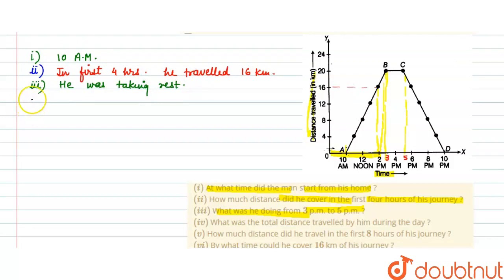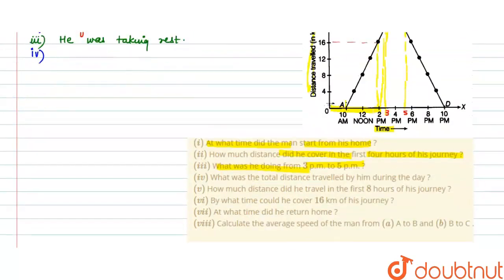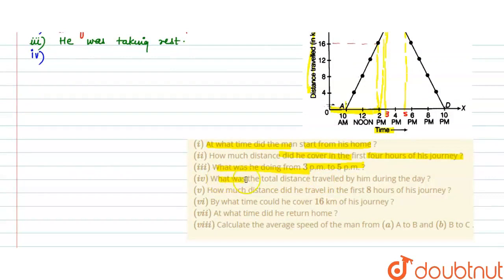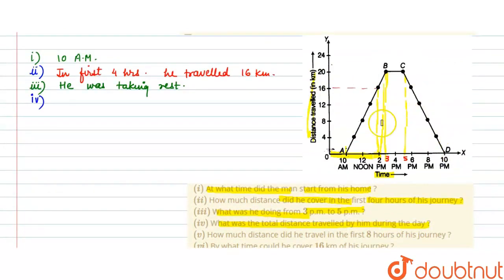Now, fourth part is asking: What was the total distance traveled by him during the day? The whole day, how much total distance did he travel? Let's see, how will we calculate from the graph? If you see total distance, first he went from here to here up to 20, then rest and then came back to 20.